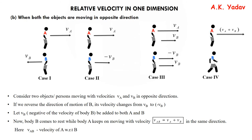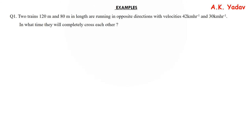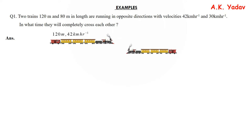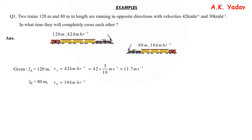Let us do a few questions to understand the concept. The first example: two trains moving in opposite directions with velocities 42 km/h and 30 km/h. We need to find in what time they will completely cross. The hint is that in crossing, the total length is the sum of the individual lengths. Train A has velocity 42 km/h and length 120 m. Train B has velocity 30 km/h and length 80 m. Converting: VA = 11.7 m/s and VB = 8.3 m/s.